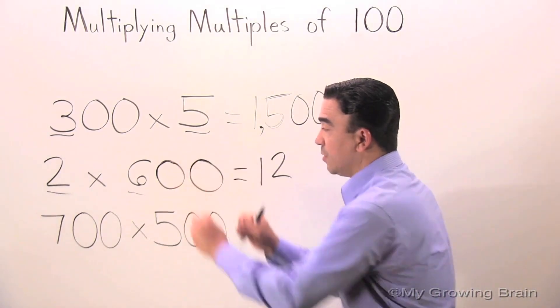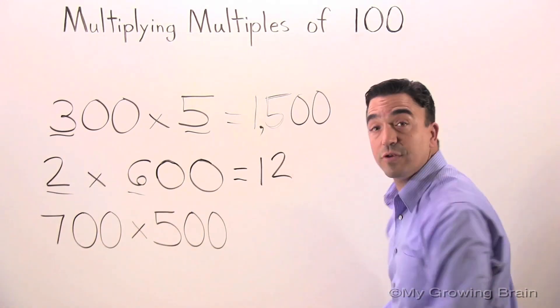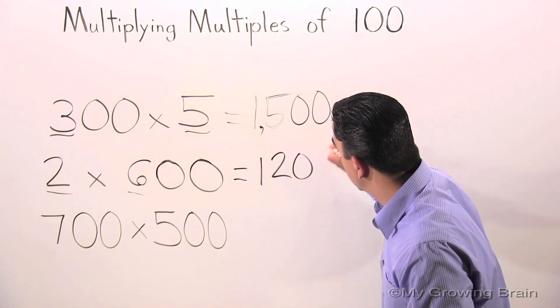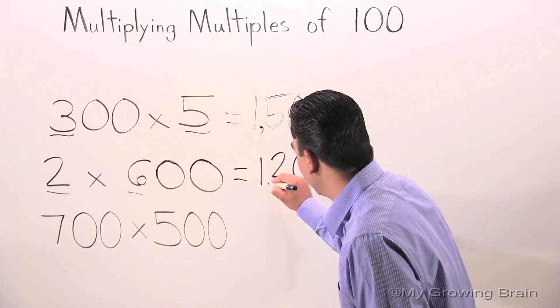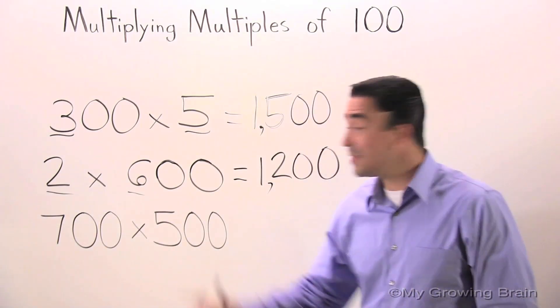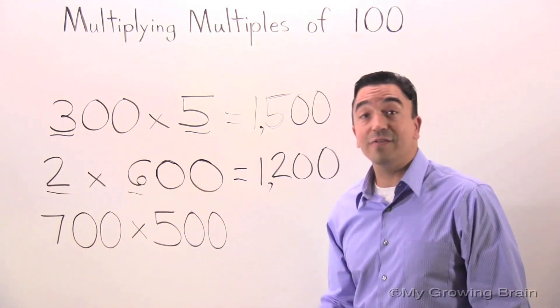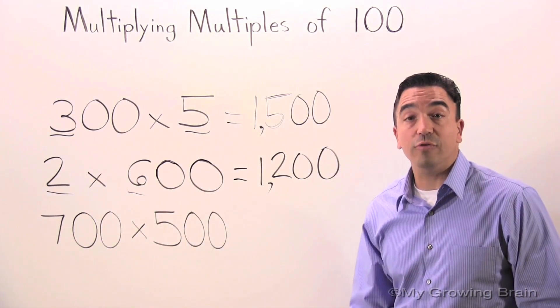Now I'm going to take the two zeros and put them right after the 12. Don't forget the comma. 2 times 600 is 1,200.